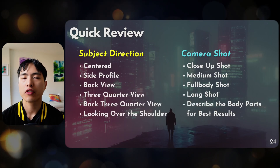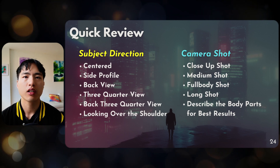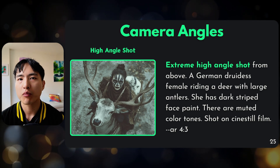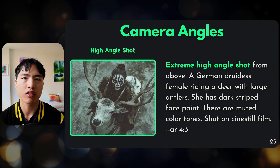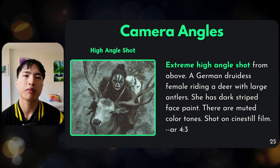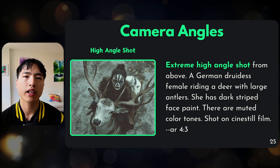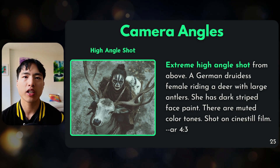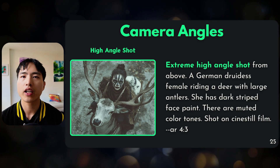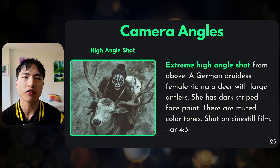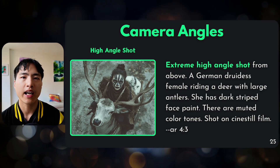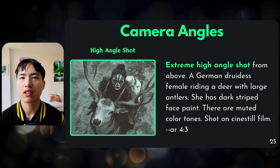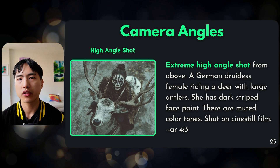Let's do a quick review. We've covered subject direction and how to frame the subject in the camera shot. For camera angles — think of the subject inside a big sphere, and you're taking photos at different points on that sphere. One basic example is a high angle shot, where you're shooting from above with the camera pointing down. This typically makes the subject look smaller and weaker, putting you in a position of power.